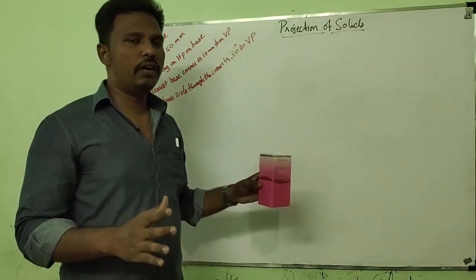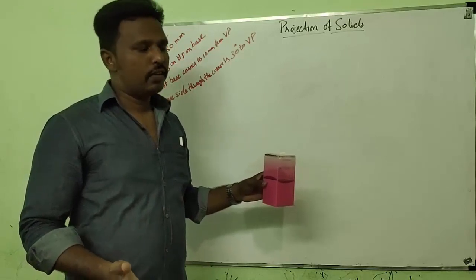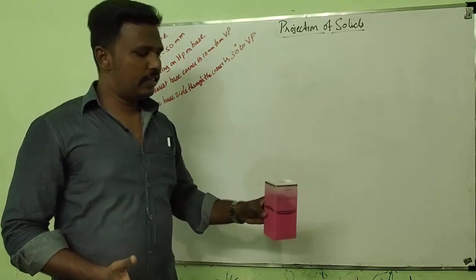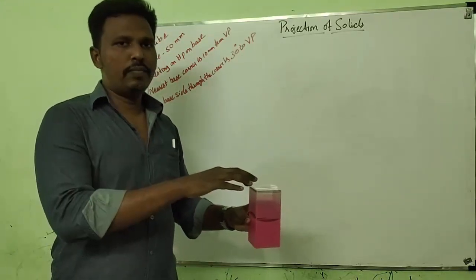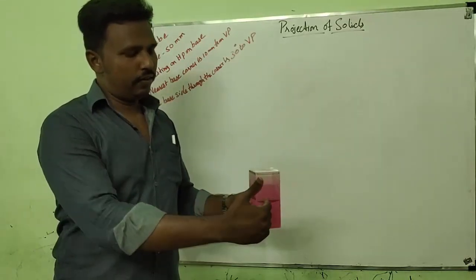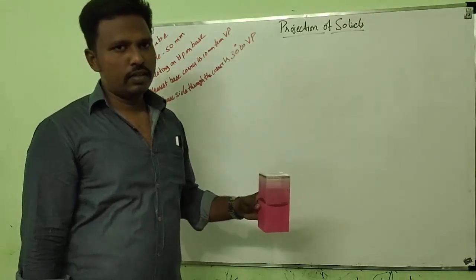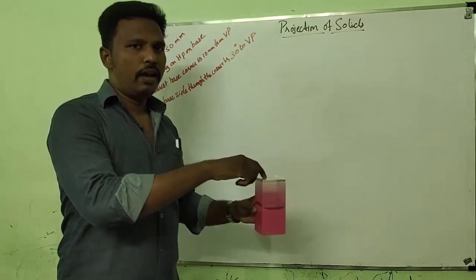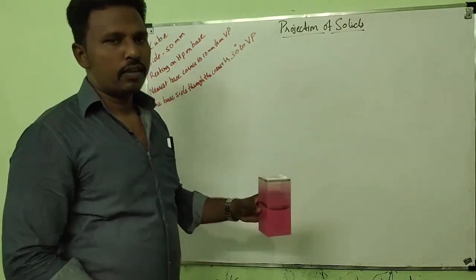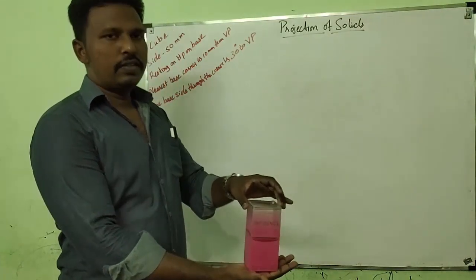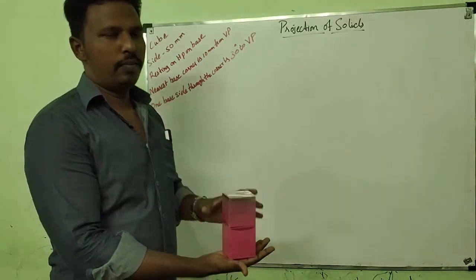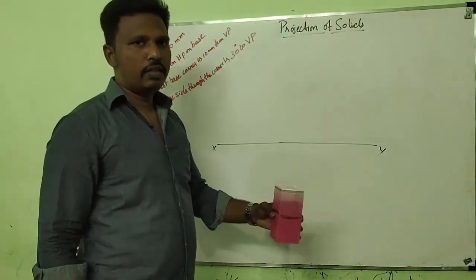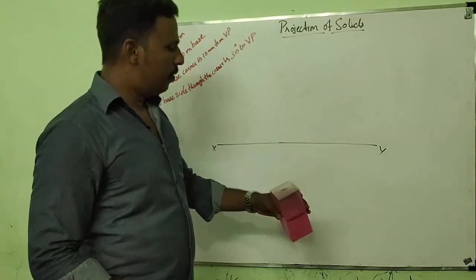Before drawing the projection, we must decide which view should be drawn first — whether the front view or top view. That is decided based on the base view and lateral view. In this case, the square shape is visible in the top view but not in the lateral view. So the view in which we can see the square shape is the base view. In this problem, the base view is the top view, so we have to start from the top view.